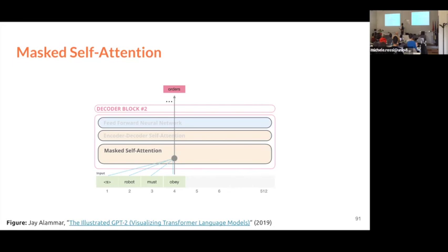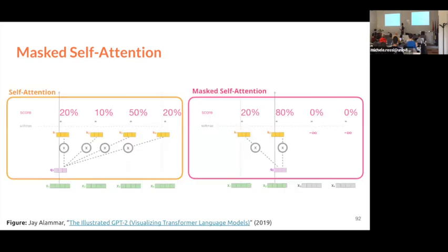This is what masked self-attention does — it restricts attention to previous positions. How is it done? With a simple trick: before, a query for the first word was compared with all keys. Now, if we have the query for the second word and don't want to attend to future keys, we just put minus infinity for those positions. When we apply the softmax, minus infinity becomes zero, so those attention weights are zero — meaning we don't take those words into account for that query.